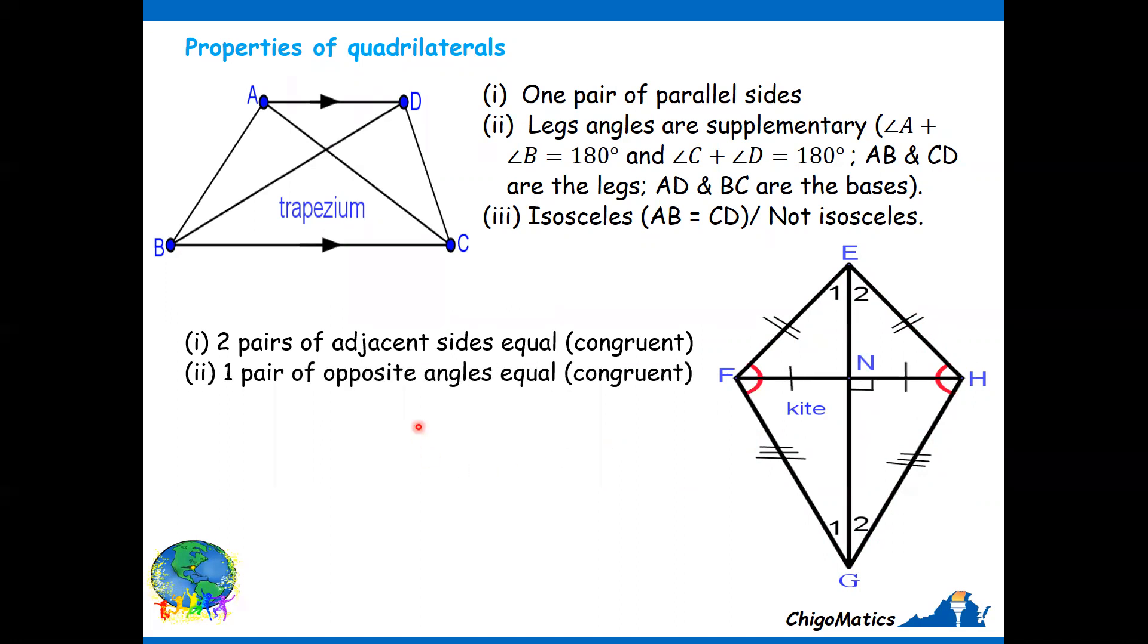One pair of opposite angles is equal. The one marked in red, angle F and angle H are equal. It's just that pair. Diagonals are perpendicular. That means the shorter one and the longer one, they meet at 90 degrees. Small diagonal bisected. The smaller one is FH. So the bigger diagonal bisects FH. That means we divide into two equal parts, meaning FN equals NH.